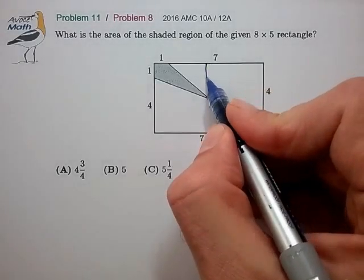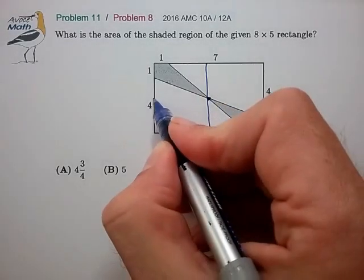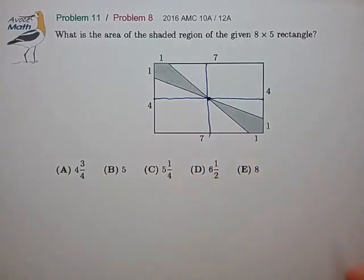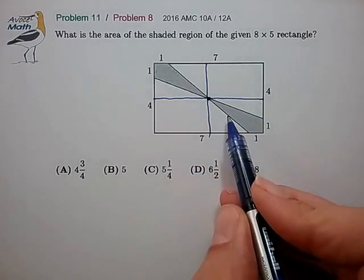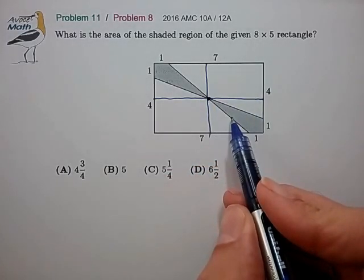Because what that means is we can really just look at one quarter of this figure, and that's a little bit easier. So let's look at the lower right-hand corner.